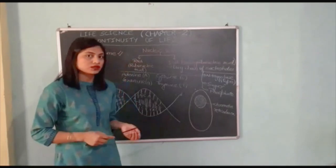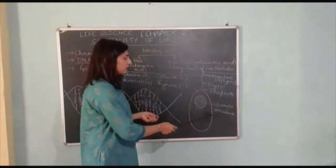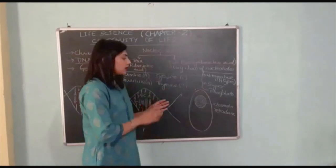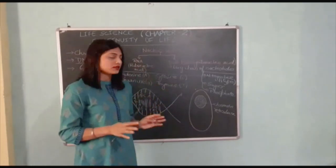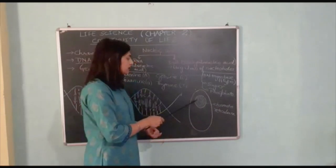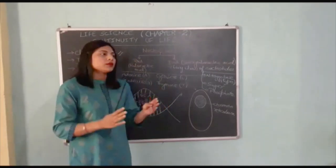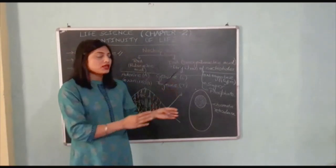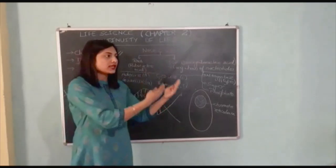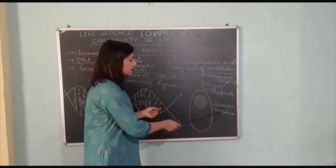You can say chromatin reticulum. It is a network, network form of DNA inside the nucleus. So this is chromatin reticulum. But there are different stages of a cell.